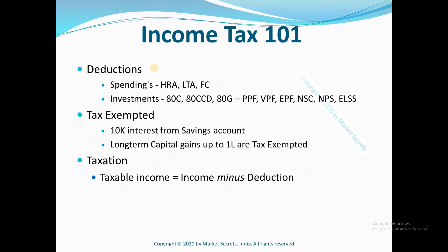Moving on, the next item is deductions. The government provides a lot of deductions which you can effectively use to reduce your taxation. There are two major classifications here. One is on the spendings — if you spend on specific items like HRA (house rent allowance), so if you are living in a rented house then you can claim some deductions. Likewise there are other components like LTA (leave travel allowance), food coupons, fuel reimbursements, and a lot of other items you can claim under your spendings.